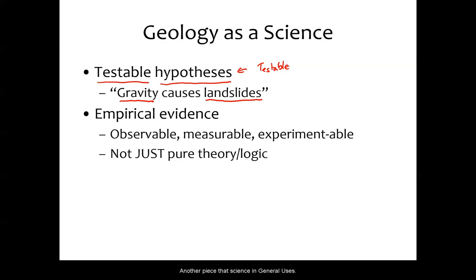Another piece that science in general uses is that we use empirical evidence. This means measurable and thus quantifiable. You can put a number on it that you can compare with other numbers. It's observable. We can observe it either with our own senses or with instrumentation. We can measure it, so we can measure it and quantify it. And you can do, in some cases, experiments with it where you set up ways in which to change some variable and see how it changes the evidence that comes out.